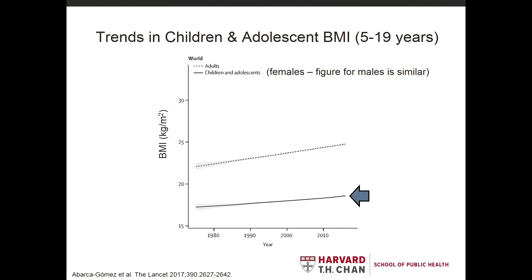When we look at trends in adults versus kids from the same NCD Risk Group data, the dotted line is the trend for BMI in adults, and the solid line with the arrow is the trend in adolescents and children. The trend in BMI is not as steep in kids — some are calling it a lag in the prevalence of overweight and obesity among children and adolescents — but it's still increasing. There are only a handful of countries, and even within those, specific sociodemographic groups, where we're seeing a plateau or decline. Globally, when we look at kids, there's a steady increase in BMI.